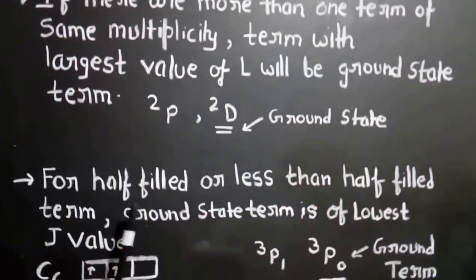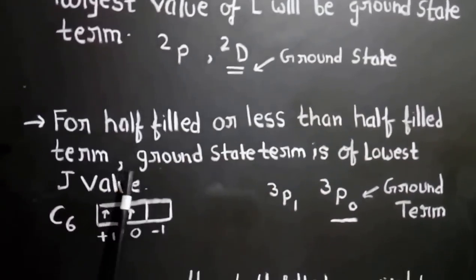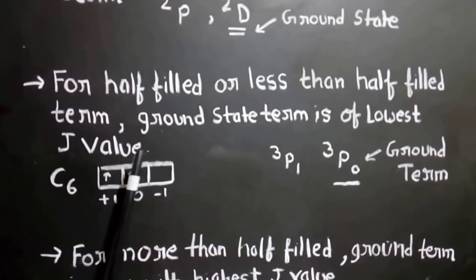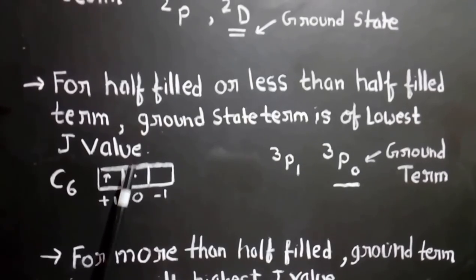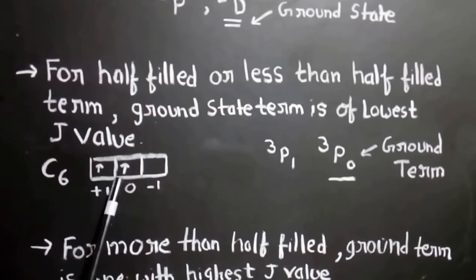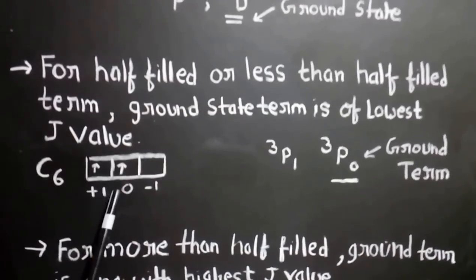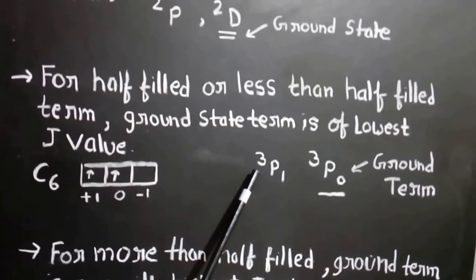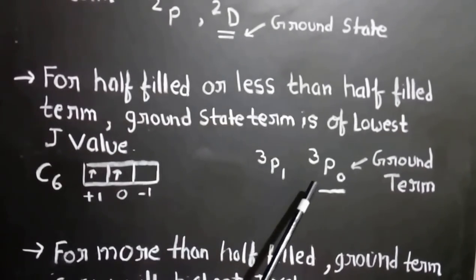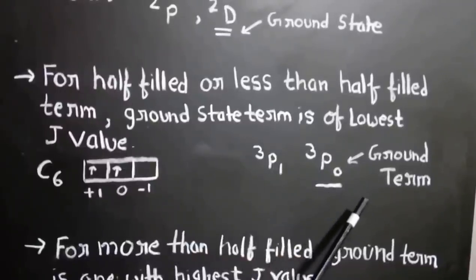The third rule is that for half-filled and less-than-half-filled terms, the ground state term is the one with the lowest J value. For example, in carbon (C6), there are 2 electrons in the P orbital, so it is less than half filled. For this state there are two terms, ³P₁ and ³P₀, out of which the lower one — ³P₀ — is the ground state term.